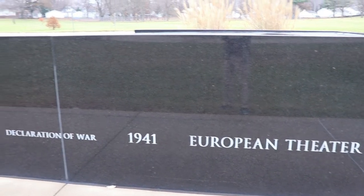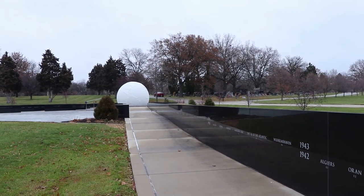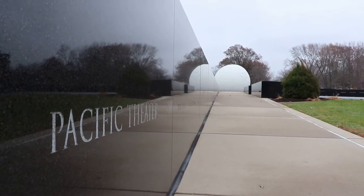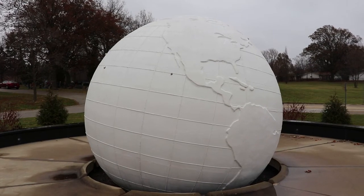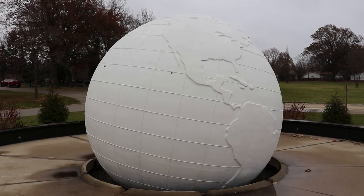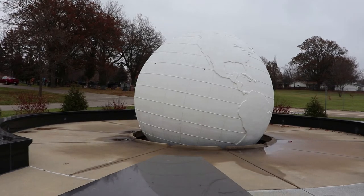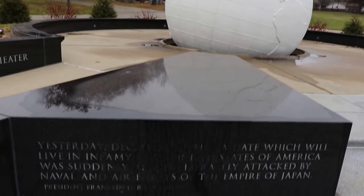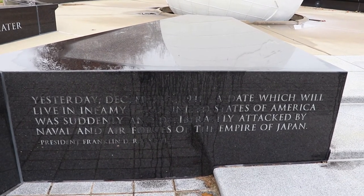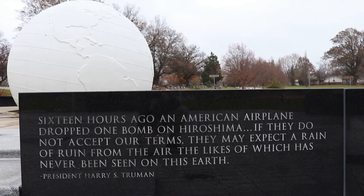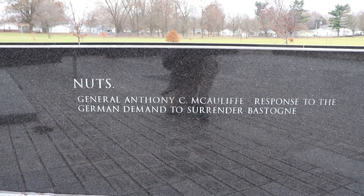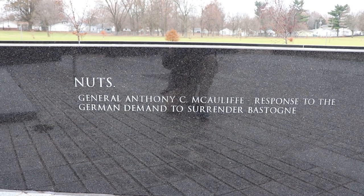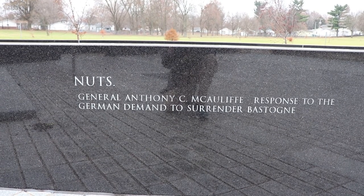This black granite slab memorializes the Eastern Theater and lists various battles. This is the Pacific side. What's really cool about this one is the 22-ton white globe, 12 feet in diameter. Between the two sides are engraved quotations. Because of the two sides and the quotes, this does remind me a lot of the National World War II Memorial in DC, which was dedicated in the same year. I really appreciate that they have this one. General McAuliffe's epic response to German demands to surrender — he simply responded, 'Nuts.' What a hero.